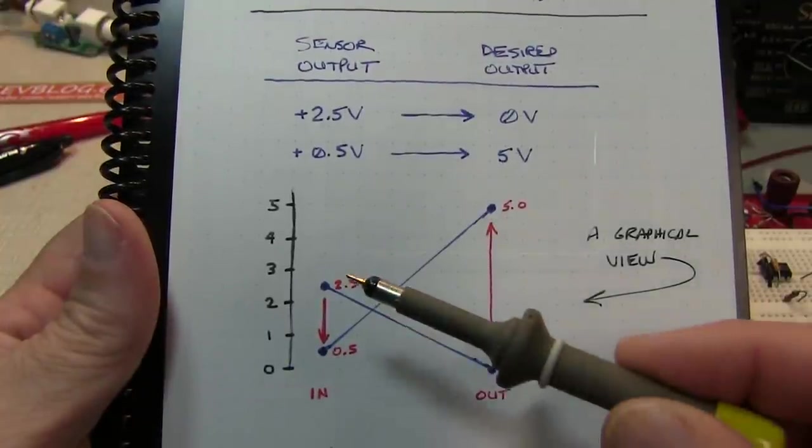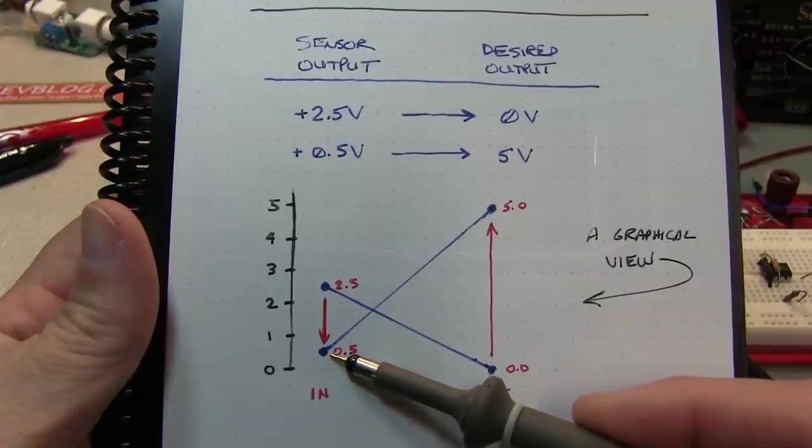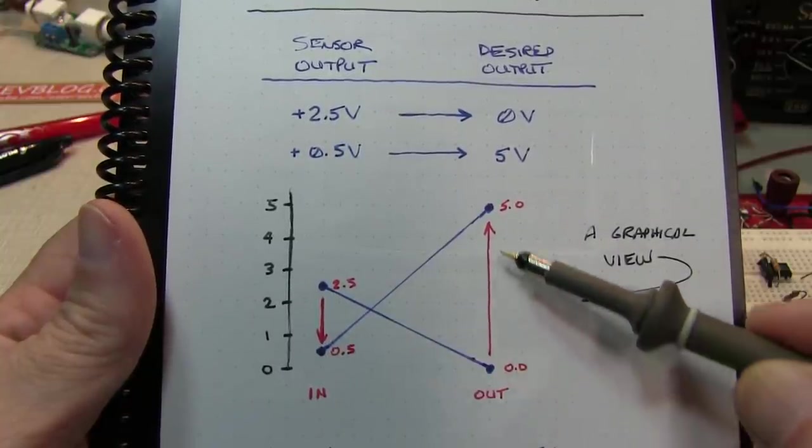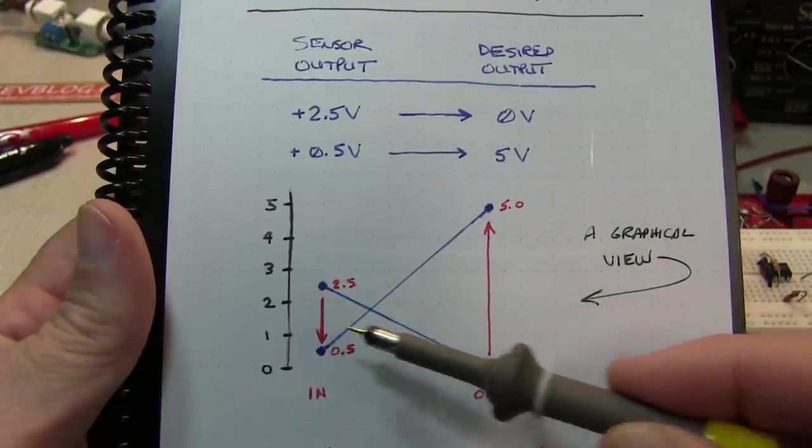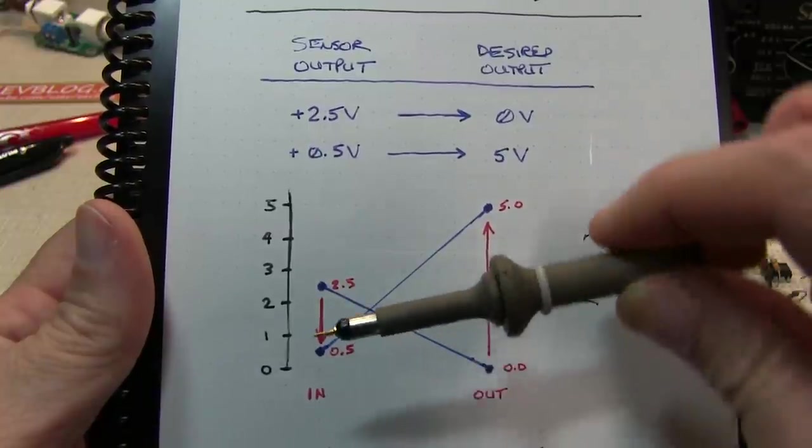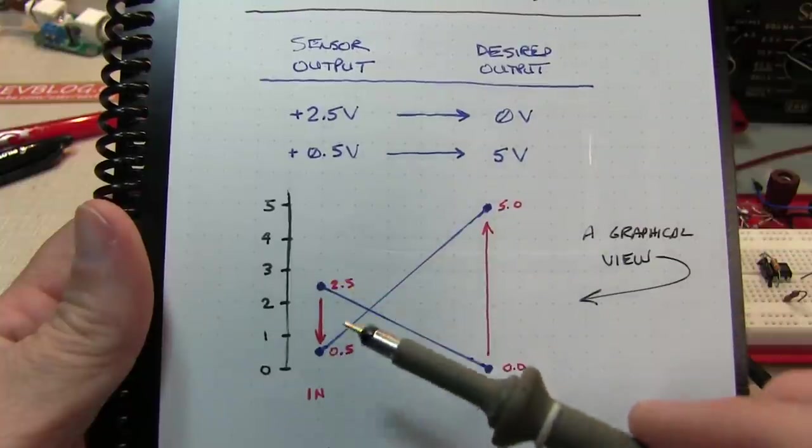Here's a graphical way to look at it. We go from plus 2.5 to plus 0.5, and that is going to correspond to a 0 to 5 volt output. So as this input voltage drops, we want the output voltage to rise. We're going to want to do essentially this kind of a seesaw operation with our conditioning circuit.